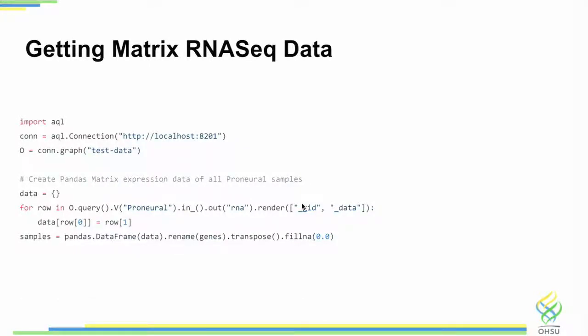If you wanted to go in and then take the expression data, this is just how you would connect in our Python client. Connect, do a traversal starting at these proneural subtype, traverse out to the donors, then traverse out to get the gene expression connected to those donors, and then pull back all of the data that's on those. And then those fields are actually just the raw gene expression values. That comes back as an array and then you can easily pack it into a pandas matrix. So this goes from graph back to high density matrix for doing machine learning, clustering, any sort of interactive analysis very quickly.